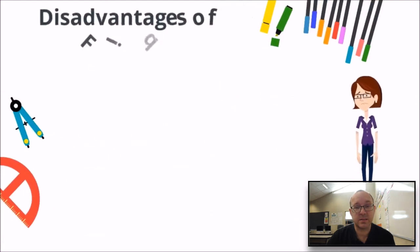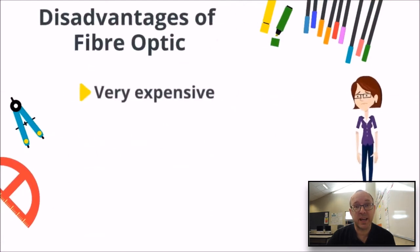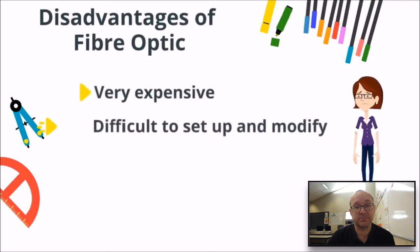Disadvantages of fibre optic: it's very expensive and difficult to set up and modify. So when we're talking about physical transmission media, we're talking about cabling and so on — not wireless or Wi-Fi, which is another thing altogether and will be covered in another video. Thanks for watching, hope that was useful. Bye for now.